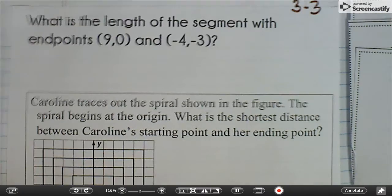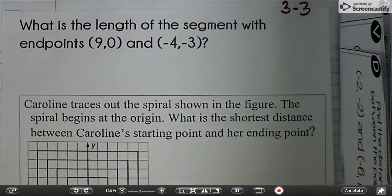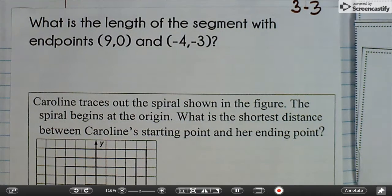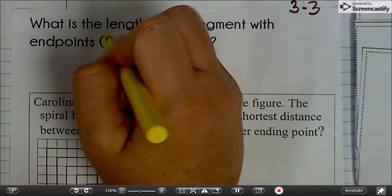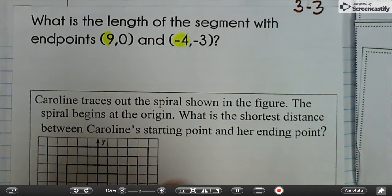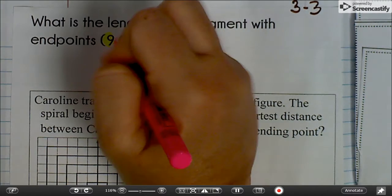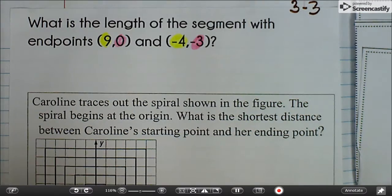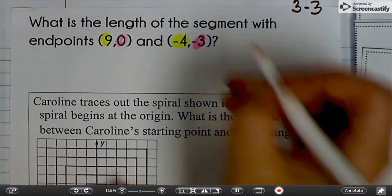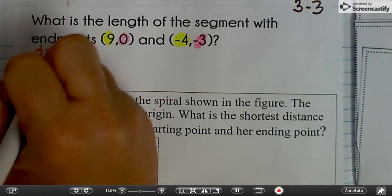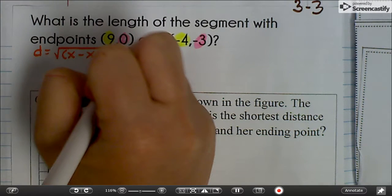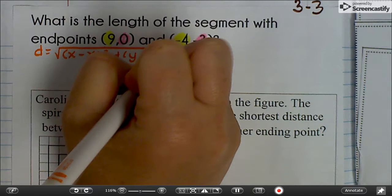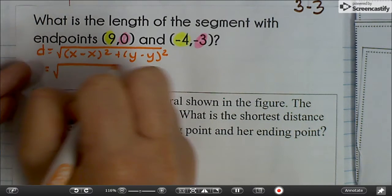What is the length of the segment with endpoints 9, 0, and negative 4, 3? So we have our x's and our y's. Distance equals the square root of x minus x squared plus y minus y squared.